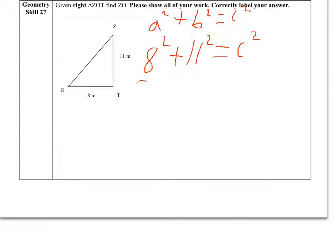8 squared equals 64 plus 11 squared, and that equals 121, equals C squared. Both of those numbers added up equal 185, and that equals C squared.